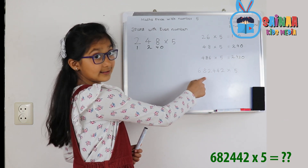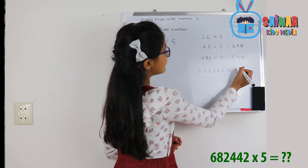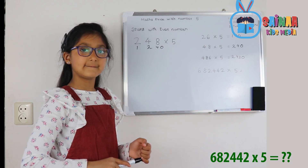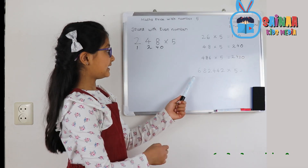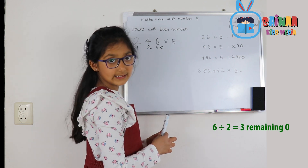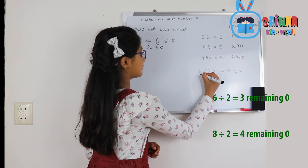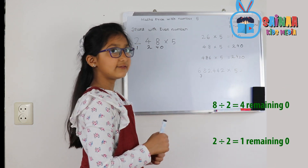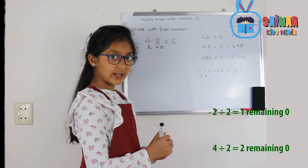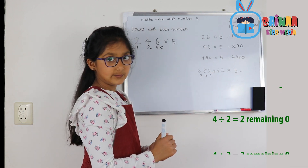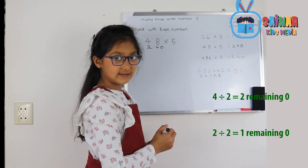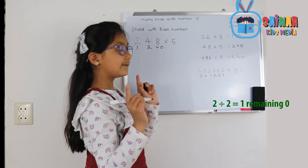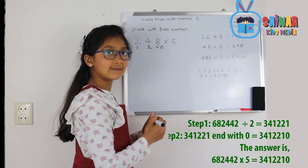Do you want to guess this one? Take a note and pen and try it out. I'll tell you the answer after 10 seconds. 6 turns into 3 because 6 divided by 2 is 3. 8 divided by 2 is 4. 2 divided by 2 is 1. 4 divided by 2 is 2. And again 4 divided by 2 is 2, and 2 divided by 2 is 1. We always end with a 0. That's your answer.